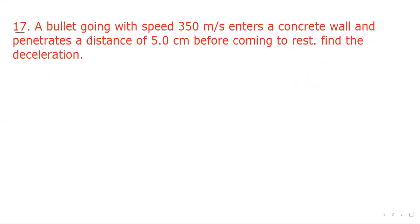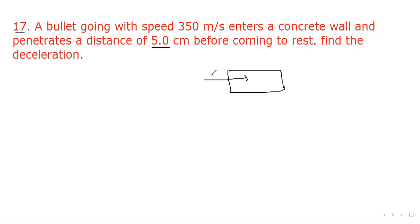Question number 17: A bullet going with a speed of 350 meter per second enters a concrete wall and travels a distance of 5 centimeter before coming to rest. Find the deceleration. The bullet enters at 350 meter per second and after covering 5 centimeter its velocity becomes zero.